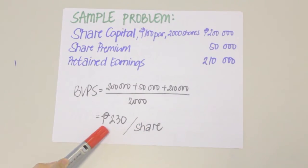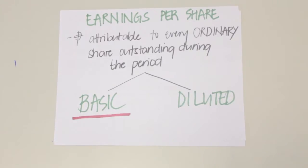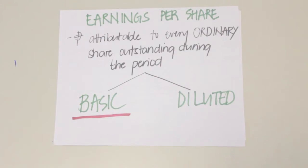Earnings per share is the amount attributable to every ordinary share of capital outstanding during the period. In other words, it is the net income attributable to each ordinary share for the period. Take note that earnings per share only pertains to ordinary shares, primarily because preference shares already have a definite rate of return.